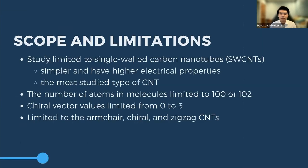For our scope and limitations, we limited our research to single-walled carbon nanotubes because they are simpler but have higher electrical properties and are the most studied type. We limited CNT structures to 100 atoms, or 102 atoms if 100 was not possible, to standardize our data. We also limited chiral vector values to 0 to 3, and restricted our study to the three known classifications of single-walled CNTs: armchair, chiral, and zigzag.